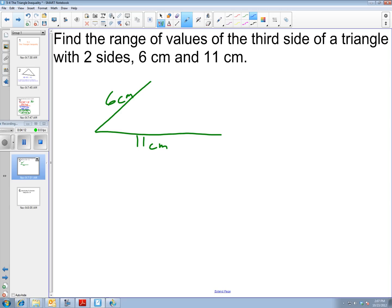We have a triangle that is 6 centimeters by 11 centimeters. We want to know what are the possibilities for that third side.